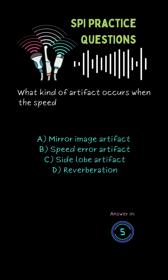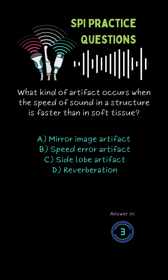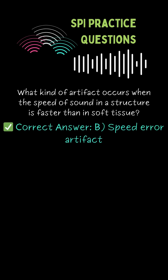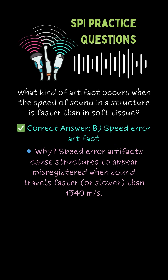What kind of artifact occurs when the speed of sound in a structure is faster than in soft tissue? B. Speed error artifact.